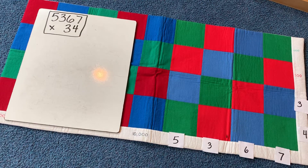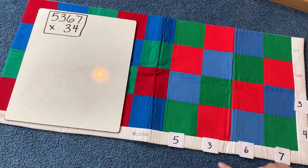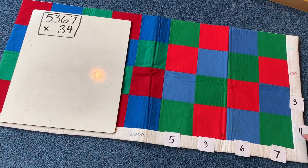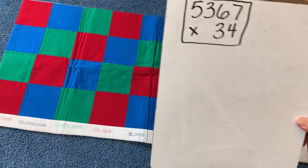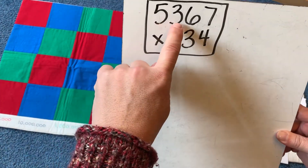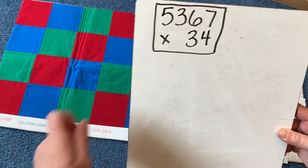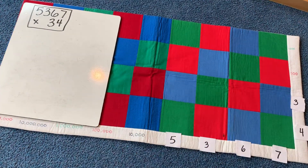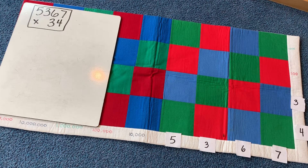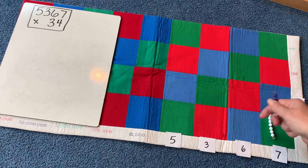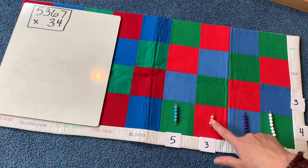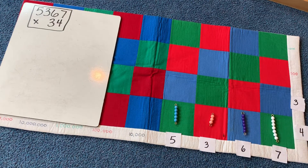First we need to know that this tells us what type of beads and this tells us how many times — just like over here it does. We're going to use five beads, three beads, six beads, seven beads, 34 times. Here's 5,367 one time.